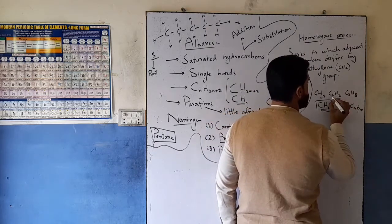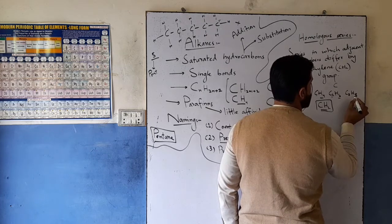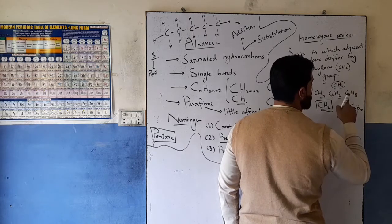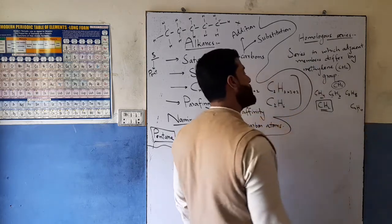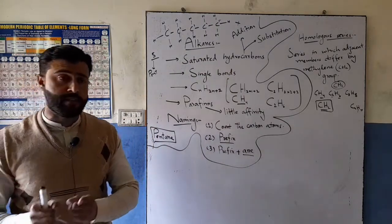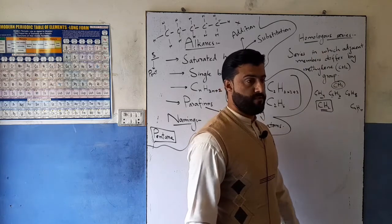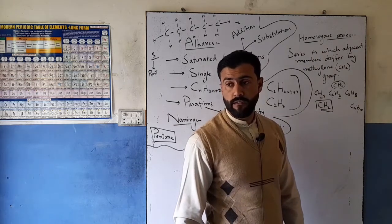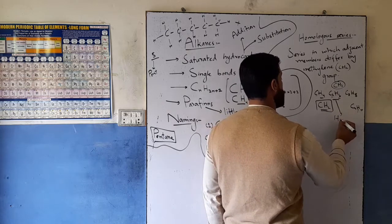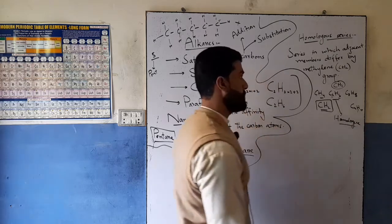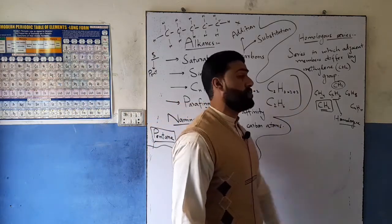Carbon is 2 and carbon is 3; 3 minus 2 is 1 carbon. Hydrogen is 6 and hydrogen is 6 — wait, carbon 3 hydrogen is 8, and 8 minus 6 is 2 hydrogen. That methylene group difference is what we call the homologous series. The member of a homologous series is known as a homologue, so adjacent homologues differ from each other only by one methylene group.